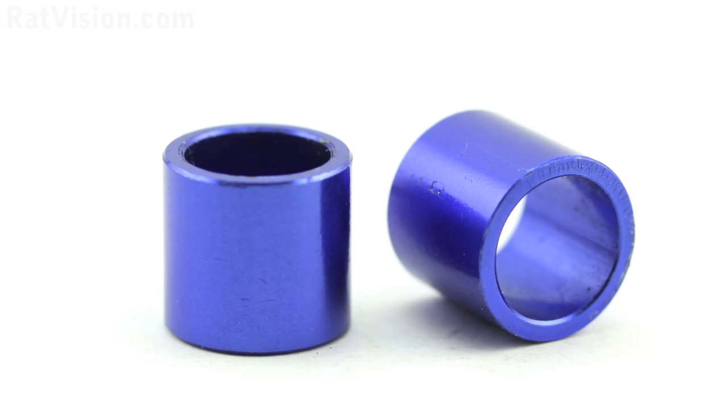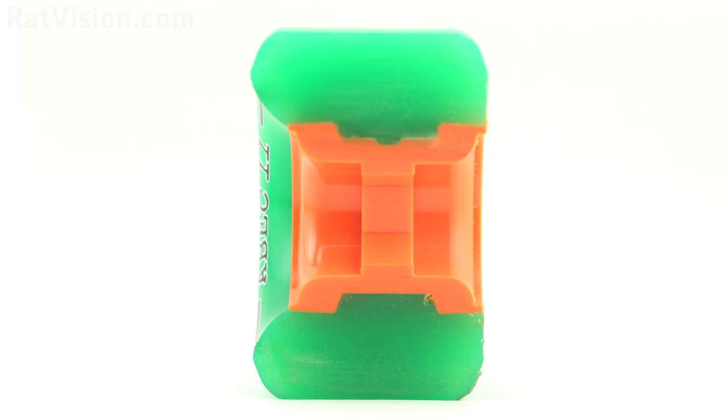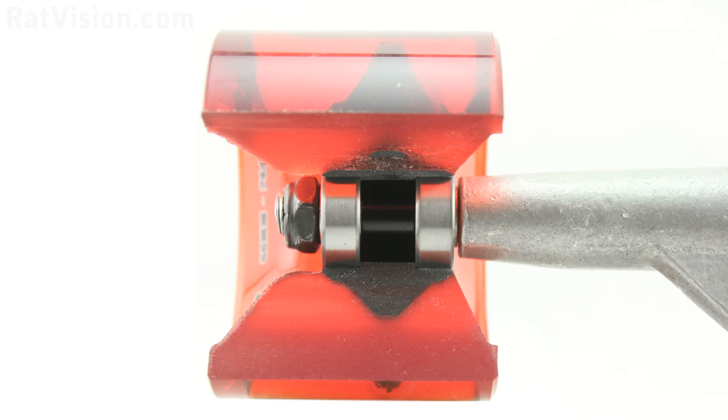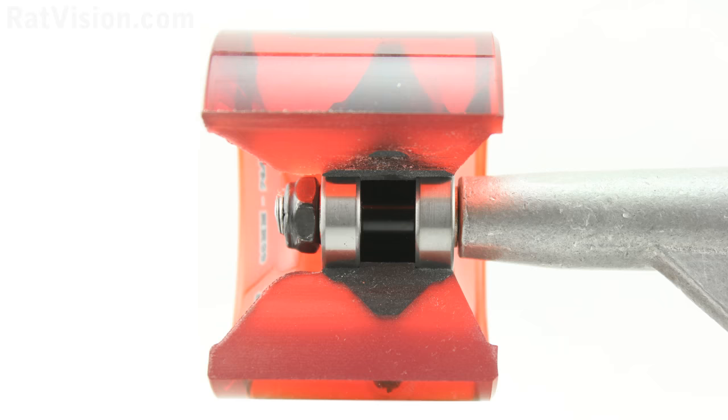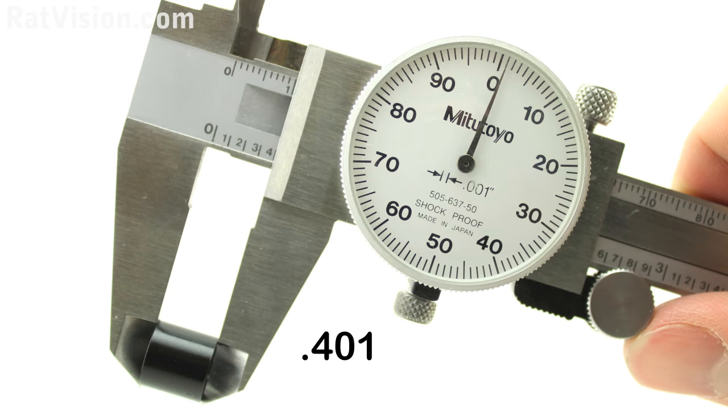This all sounds good, but the problem is most bearing spacers and wheel centers are manufactured with conflicting sizes, so each wheel may not be functioning optimally. Bearing spacers and bearing gaps or hubs inside a wheel are supposed to have a width of 4 tenths of an inch.